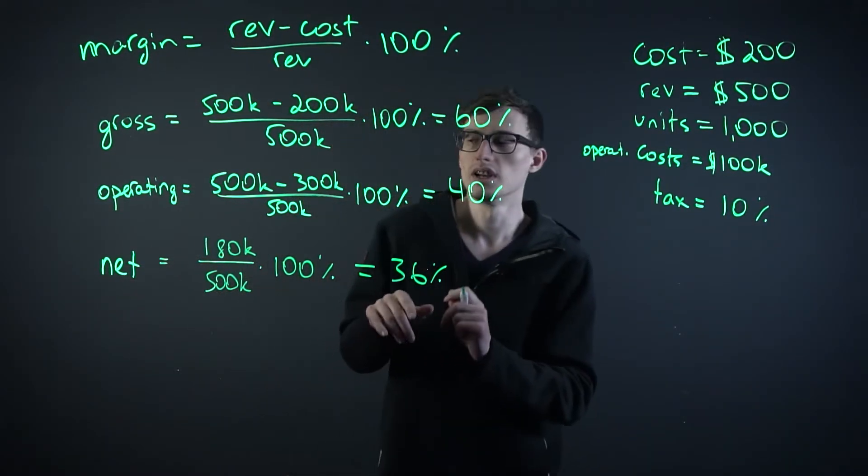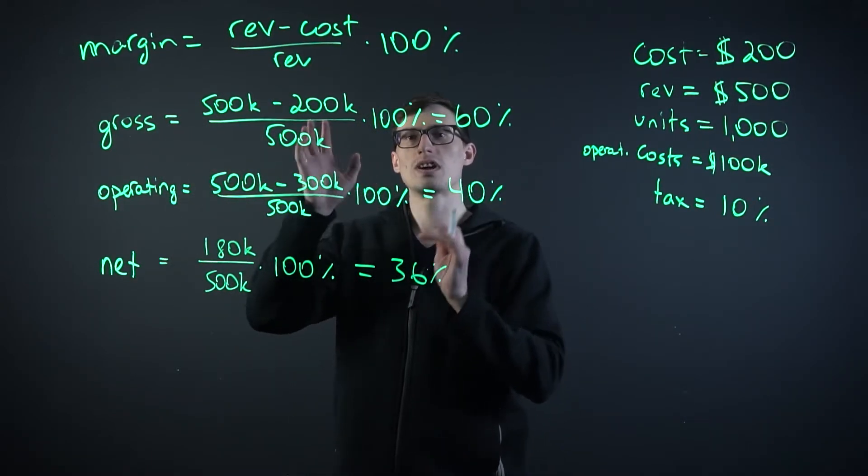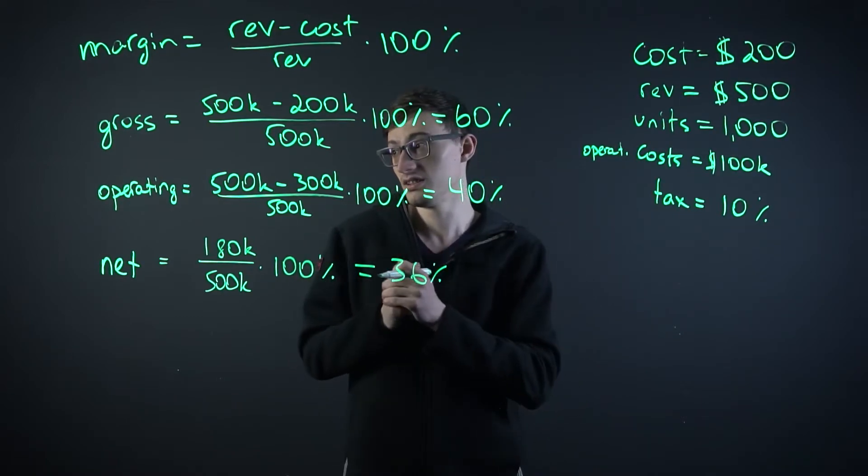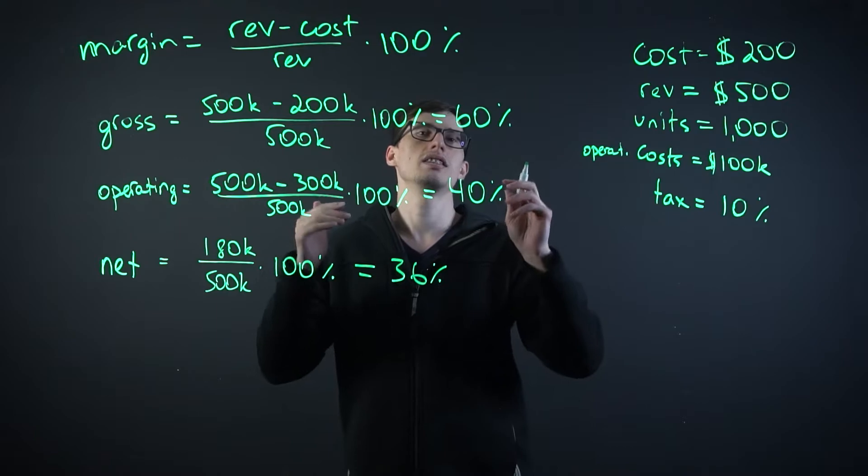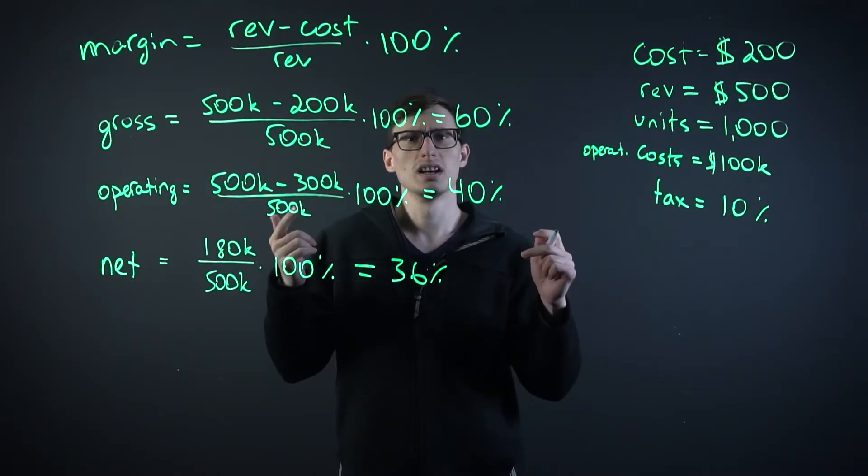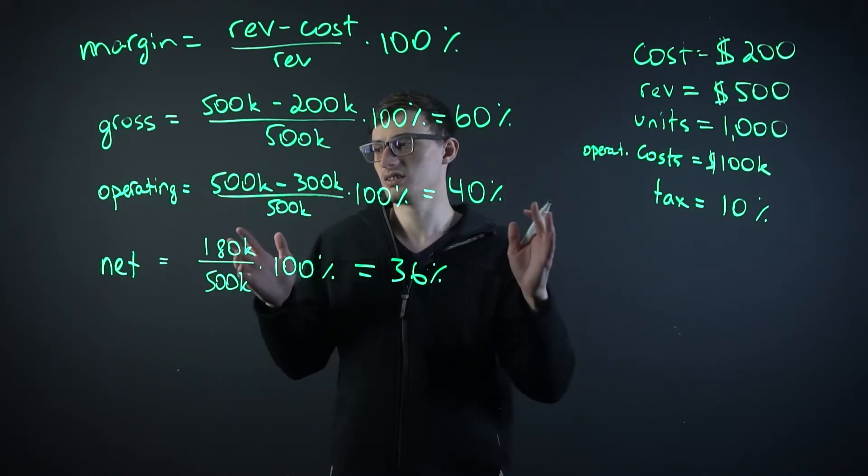This is the net profit margin. So the first one, gross, is just the revenue minus the cost of the thing that you're selling without taking anything else into account. The operating, the next one, is when you take into account operating costs, like office rent, salaries, just the different stuff, the cleaning person, whatever, everything that has to be paid.